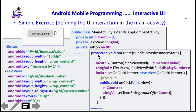In the Java file we define three variables: mCount, changeVal, and incButton. These need to be associated with the already-created XML components. In the onCreate method we add two important lines: incButton is associated with the 'increased value' button defined in XML, and changeVal is associated with the TextView called displayNumber. This is how to associate a variable with a UI component.